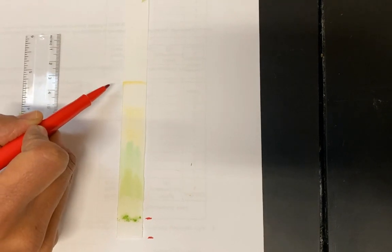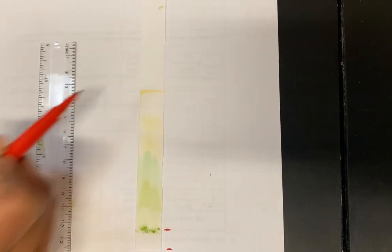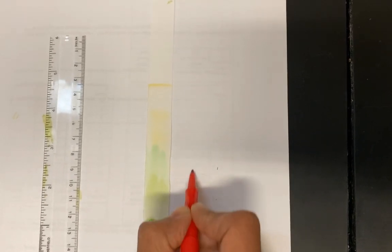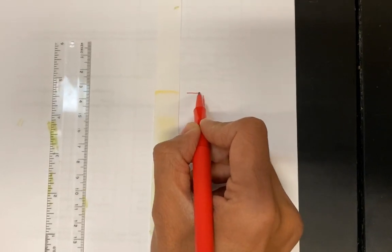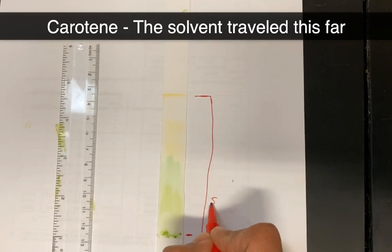So if you look in your lab, you'll see the different pigment names and the carotene moves all the way to the top. So first I'm going to draw a line to show that the solvent moved from the bottom all the way up to where the carotene is. Okay, so that's my solvent line.